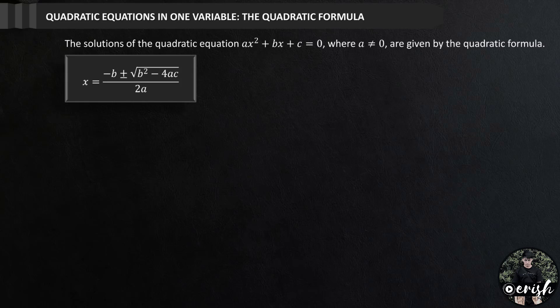The positive and negative sign indicates that there are 2 — but not necessarily distinct — solutions of the equation.